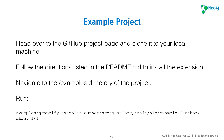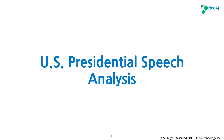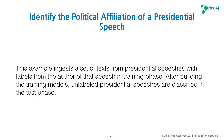After this webinar, I'm going to push an example project which identifies the author of a presidential speech transcript. I originally promised a Wikipedia example and that's still coming, but I thought this would be good for the webinar. The example project is the United States Presidential Speech Analysis — looking at transcripts of multiple speeches from a set of presidents. The goal is to identify the political affiliation of a presidential speech. It ingests texts from presidential speeches with labels from the author in the training phase, then unlabeled presidential speeches are classified in the test phase.